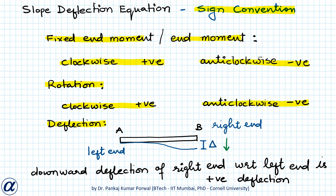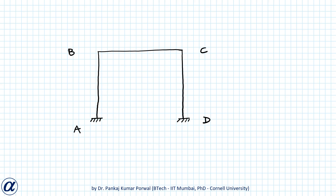If the right end goes up with respect to the left end, it is negative deflection. Note that for beams it is easy to identify left and right ends, but for portal frames it is slightly confusing because depending on how we view the frame, we may have different left and right ends. The convention I will follow is to always view the frame consistently.